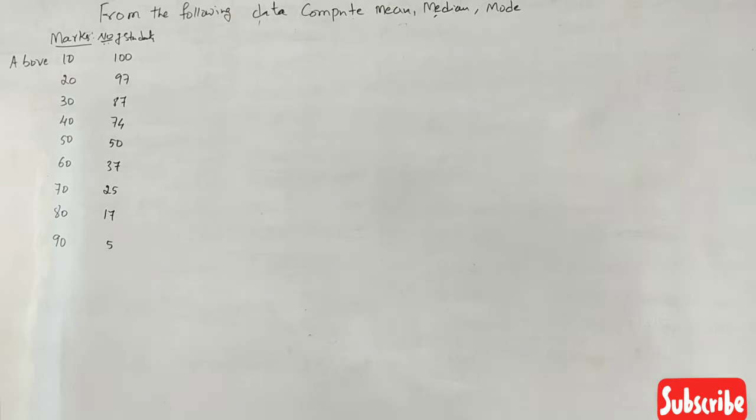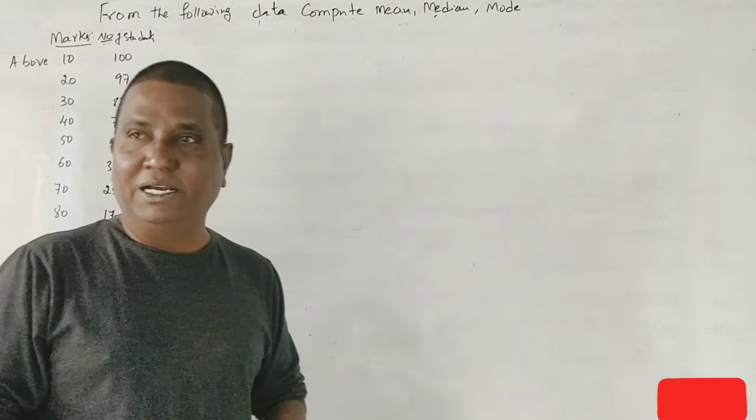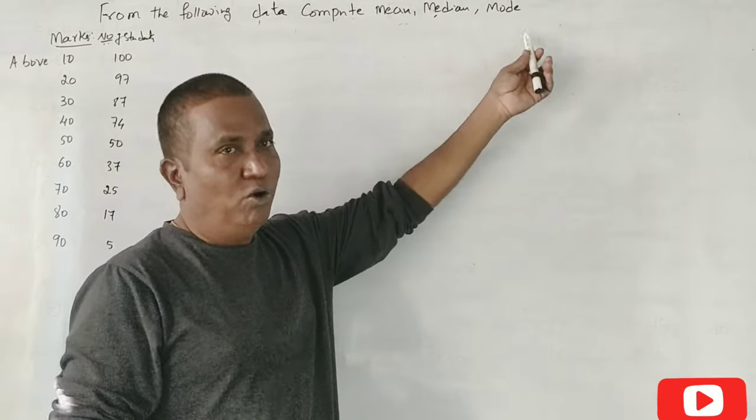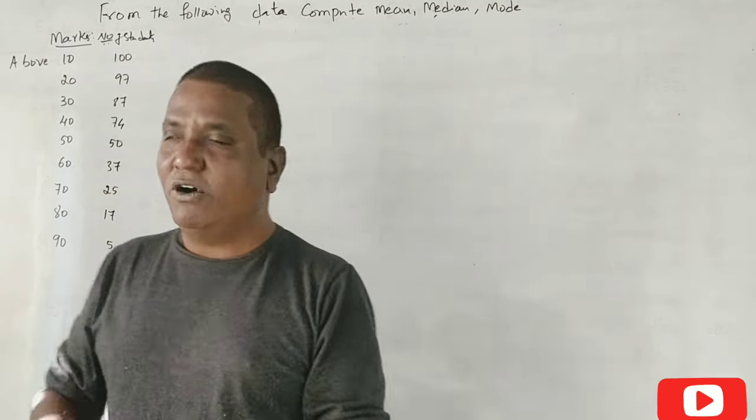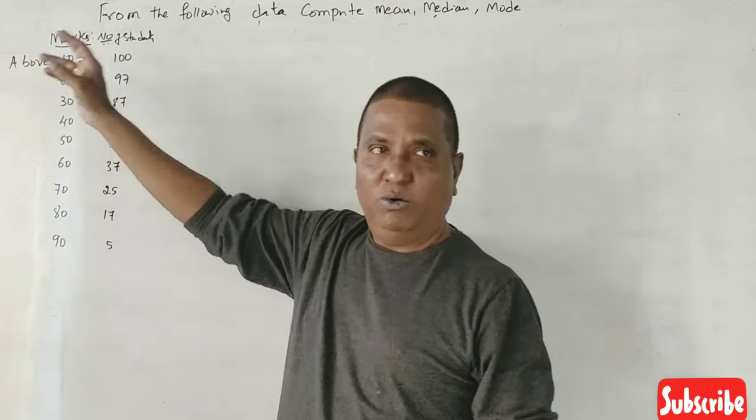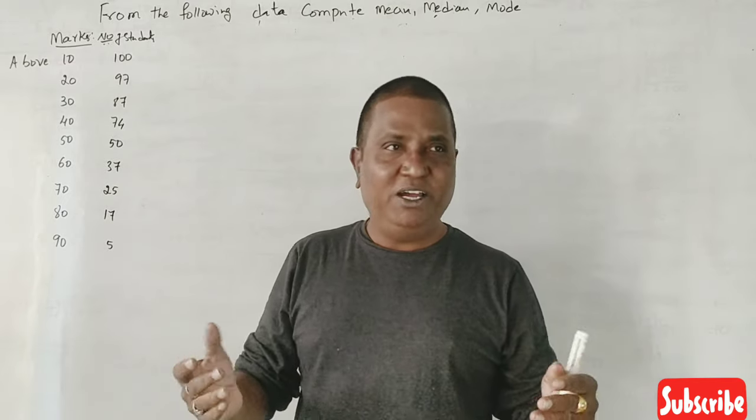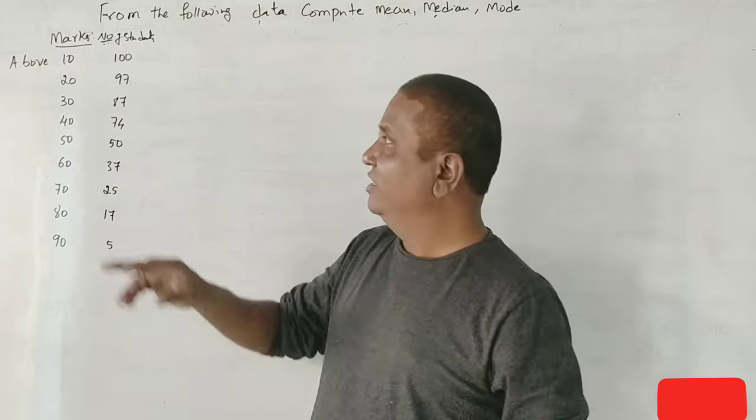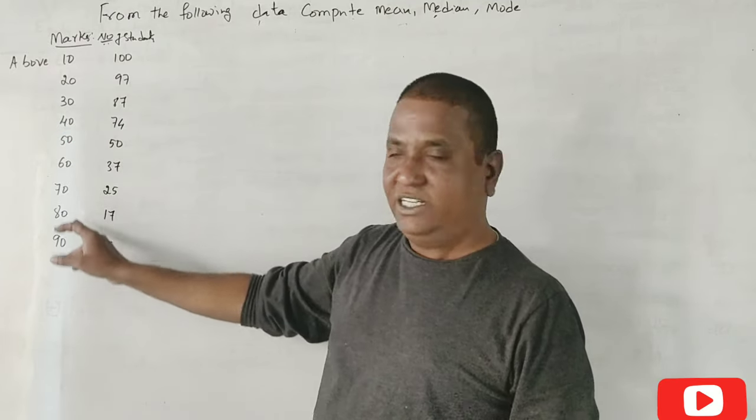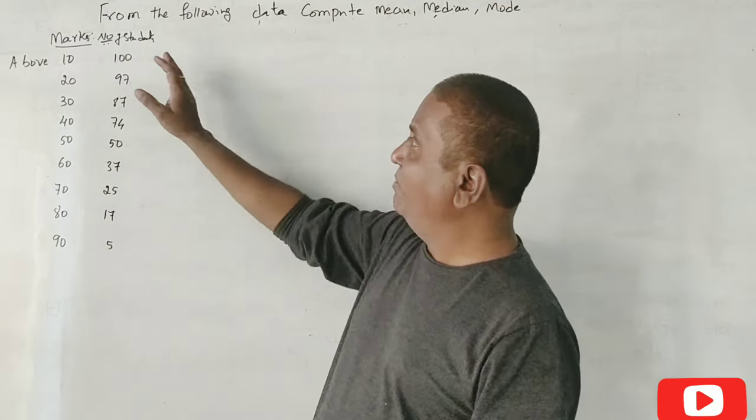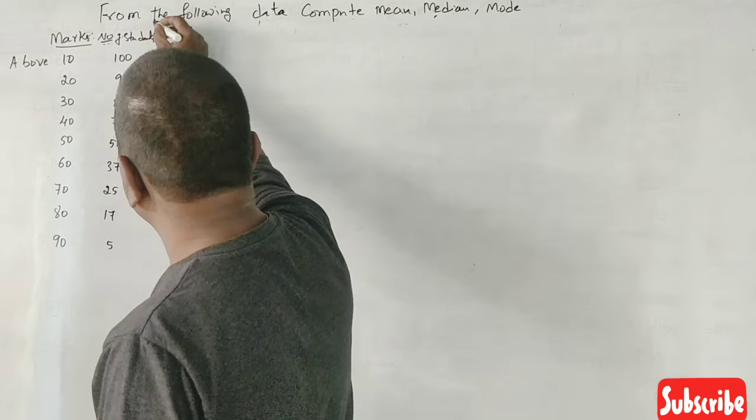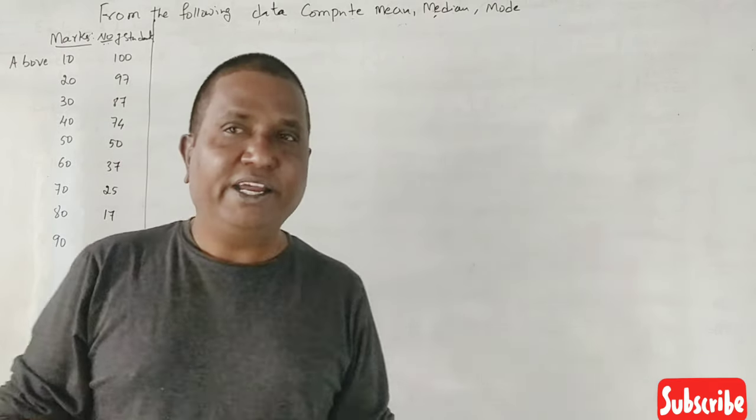Okay guys, 2019 question paper, 1 to 14 marks. Here meaning problem format, above. Above more than 10, 20, 30, 40 till 90 is given and number of students also is given. Now what question is it?